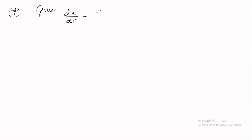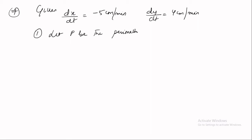Question 7: The length x of a rectangle is decreasing at the rate of 5 cm per minute and the width y is increasing at the rate of 4 cm per minute. When x = 8 cm and y = 6 cm, find the rate of change of (a) the perimeter and (b) the area of the rectangle. Given: dx/dt = −5 cm/min and dy/dt = 4 cm/min. Let P be the perimeter of the rectangle, so P = 2(x + y).